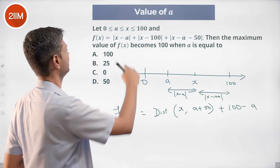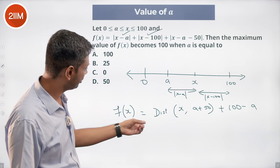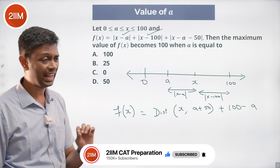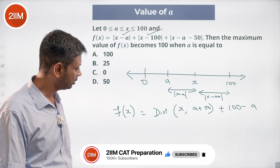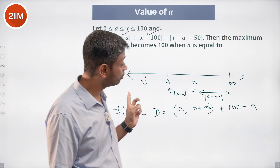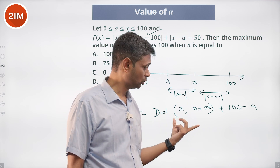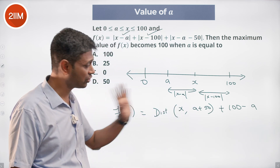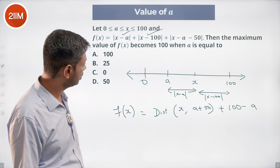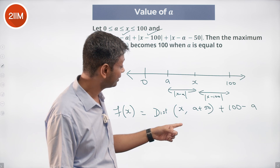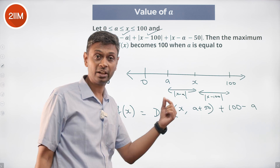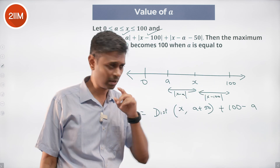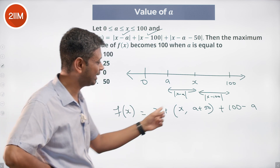So f(x) equals (100 minus a) plus the distance between x and (a plus 50). The maximum possible value of f(x) becomes 100, which means the distance between x and (a plus 50) must be maximized. Note that a plus 50 could be higher than x, or x could be higher than a plus 50, and the maximum occurs when x is 100.